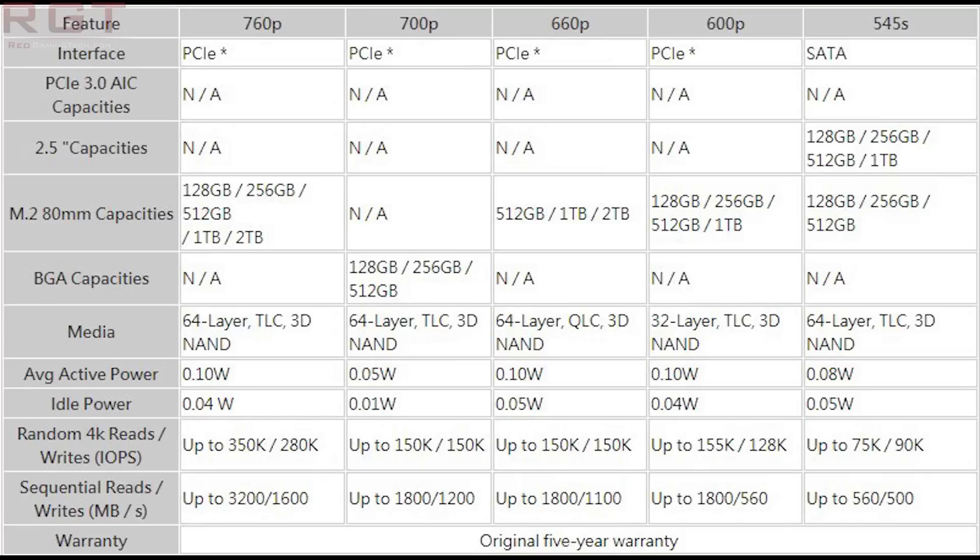The 760p uses 64-layer TLC 3D NAND, while the 660p uses QLC 3D NAND. Power requirements are just 0.01 watts for both, and idle power is almost identical.